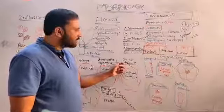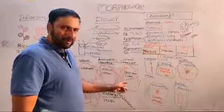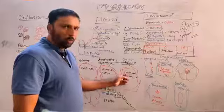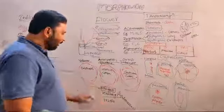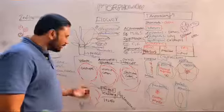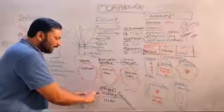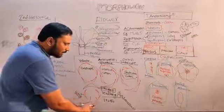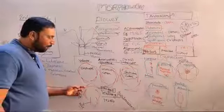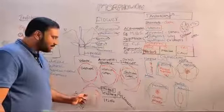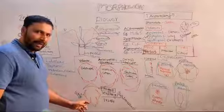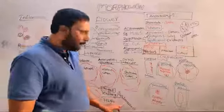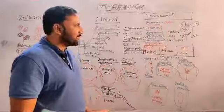Imbricate aestivation — perianth lobes are arranged in 1+1+3 manner: one is completely outside, one is completely inside, remaining three are arranged in overlapping manner — example Gulmohar and Cassia. Vexillary aestivation — papilionaceous corolla is present; one petal is the largest (standard petal) overlapping two wing petals (alae), which in turn overlap two fused keel petals (carina) that enclose the essential organs — present in Fabaceae family members.